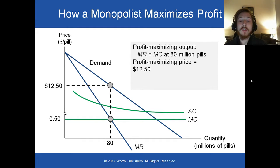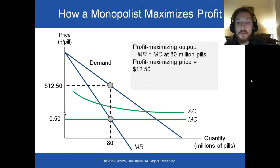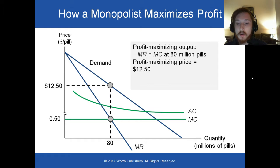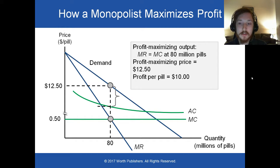But we don't set price equal to marginal cost. Instead, we set price equal to the willingness to pay — that is, how much will buyers pay for 80 million pills? We find that we don't set the price at 50 cents.